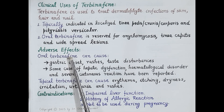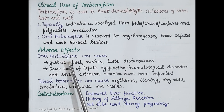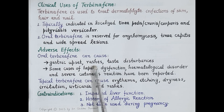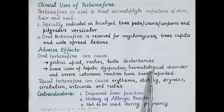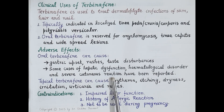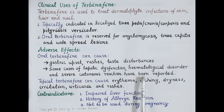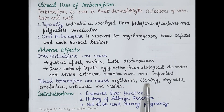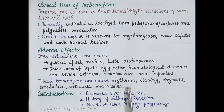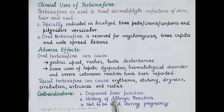Now let's study the adverse effects of oral terbinafine. Oral terbinafine is well tolerated but can cause adverse effects like gastric upset, skin rashes, taste disturbances, and some cases of hepatic dysfunction. Hematological disorders like anemia and severe cutaneous reactions like systemic lupus erythematosus have also been reported. Topical terbinafine can cause erythema (redness of the skin), itching, dryness, irritation, urticaria, and skin rashes. Terbinafine is contraindicated in patients with impaired liver function, with a history of allergic reactions, and is also contraindicated during pregnancy.